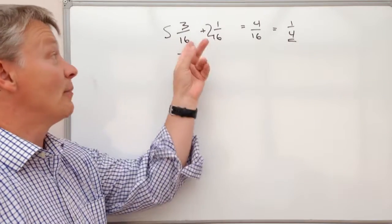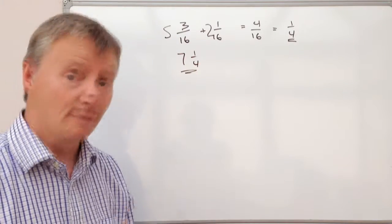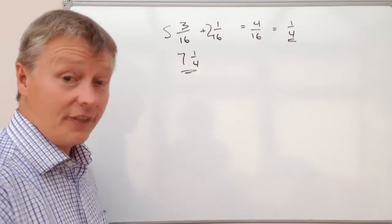So fairly straightforward when the denominators, which is the numbers at the bottom, are the same. So let's say for instance that they're different.